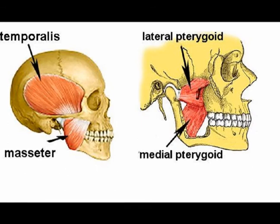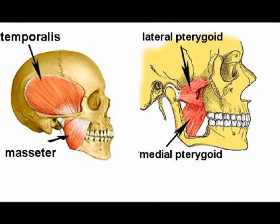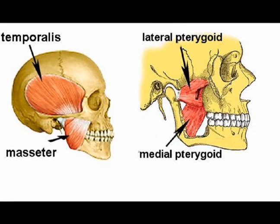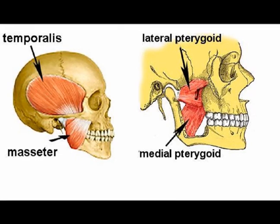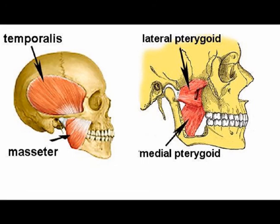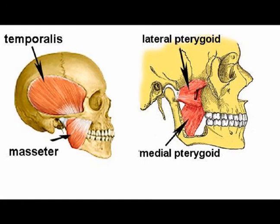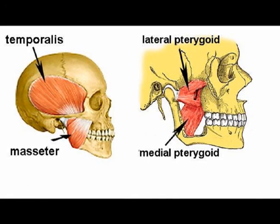The temporalis muscle is classified as a primary muscle of mastication. It is fan-shaped with anterior fibers that have a vertical orientation, mid-fibers that have an oblique orientation, and posterior fibers that have a horizontal orientation.